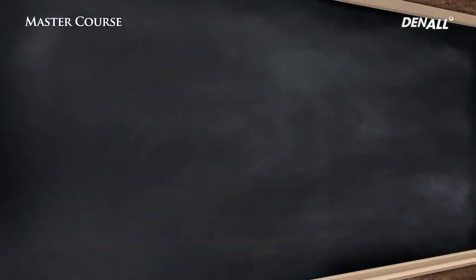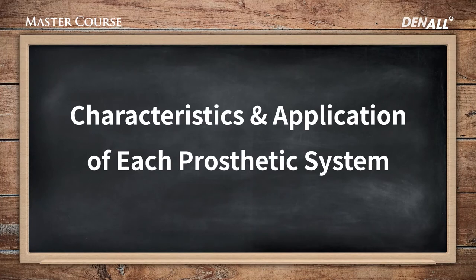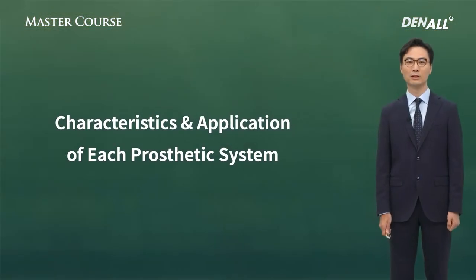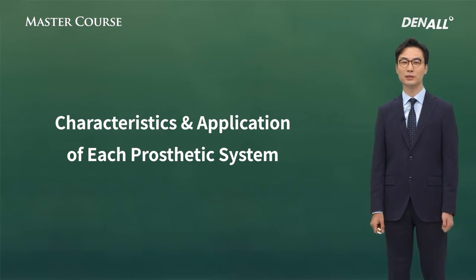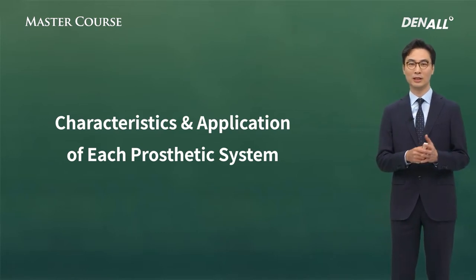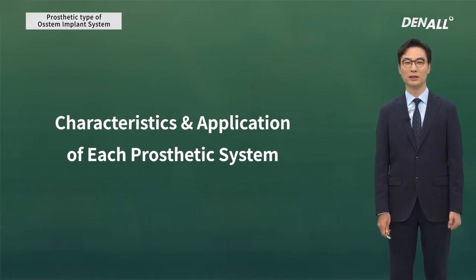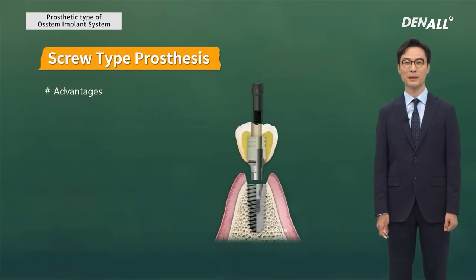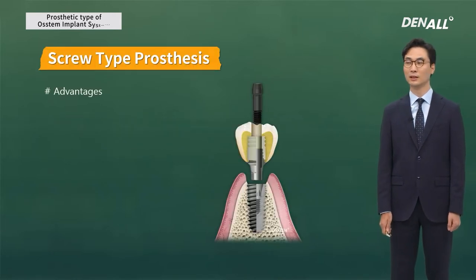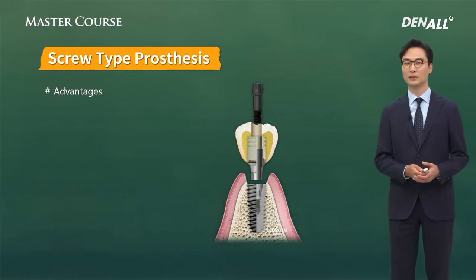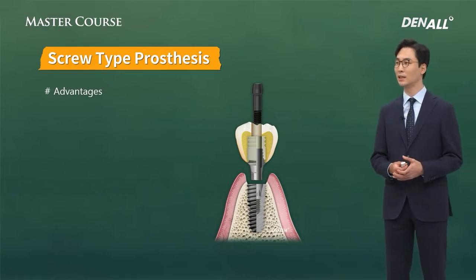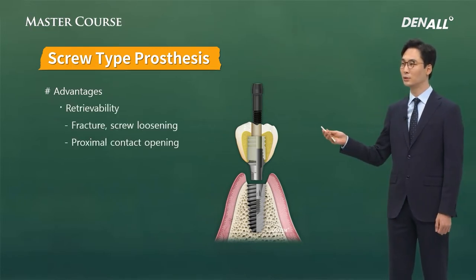Next, I'm going to talk about the different characteristics of each type of fixed prosthesis and the precautions we need to take when applying them clinically. First, the screw type — this has many advantages. The biggest advantage is retrievability.